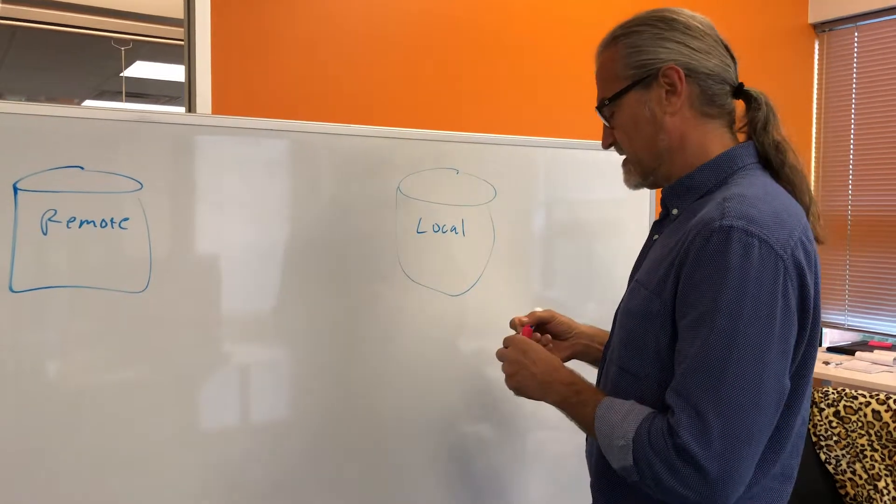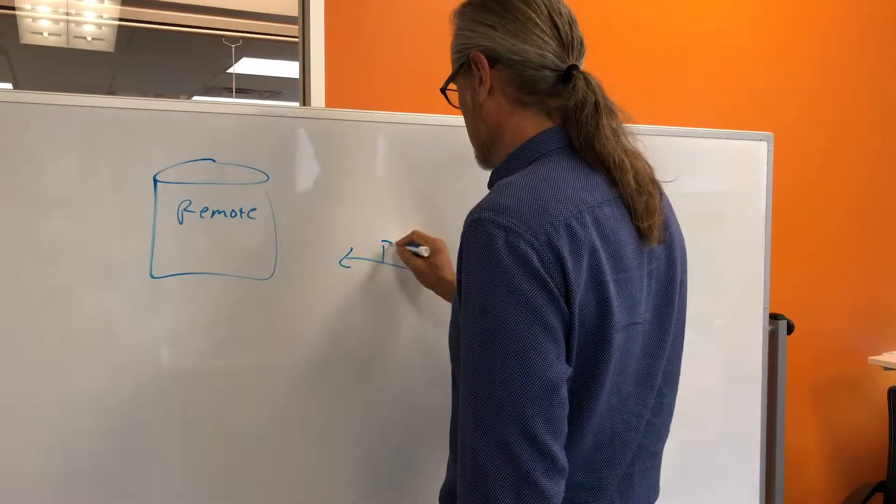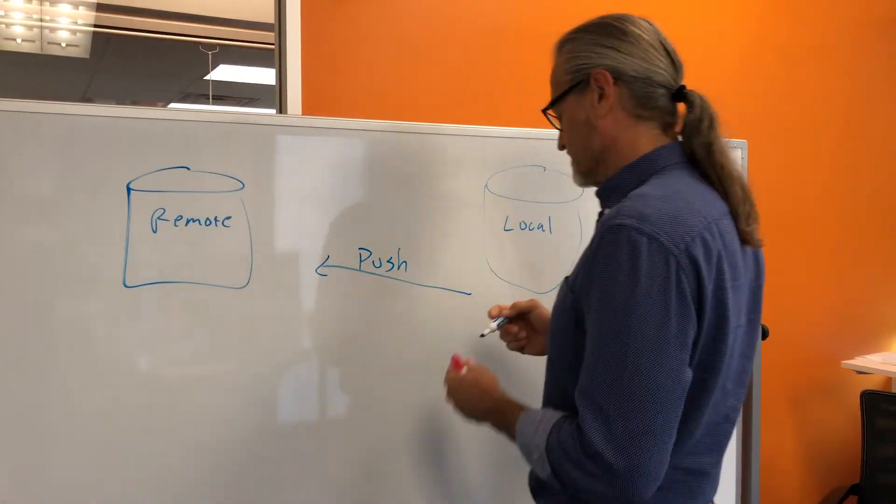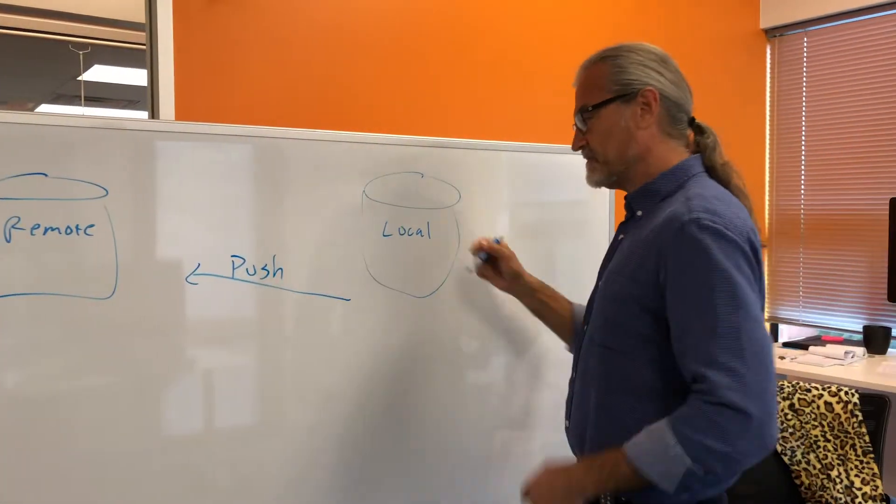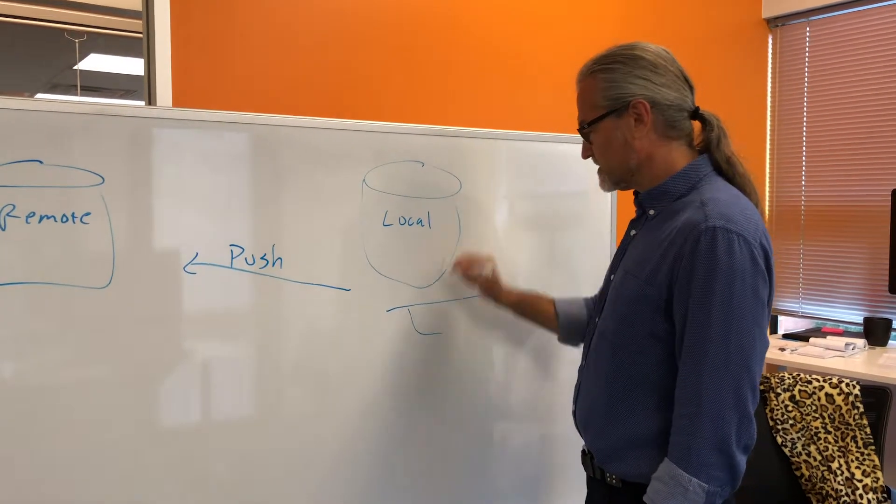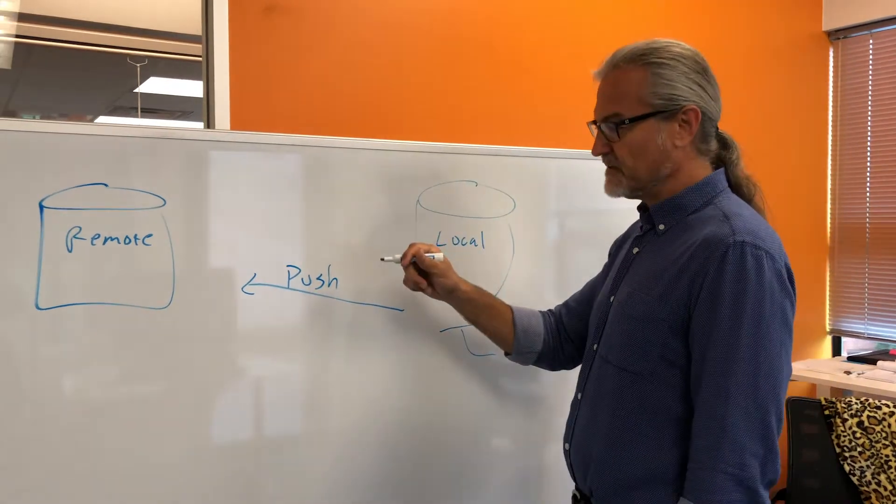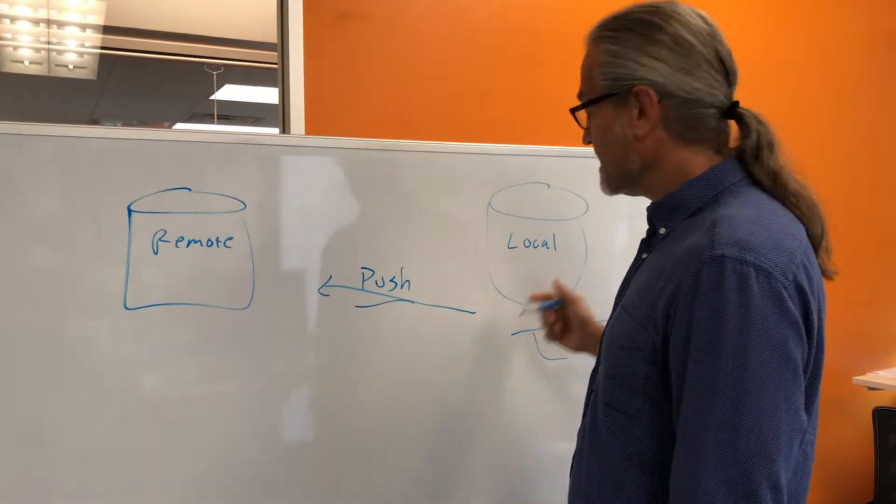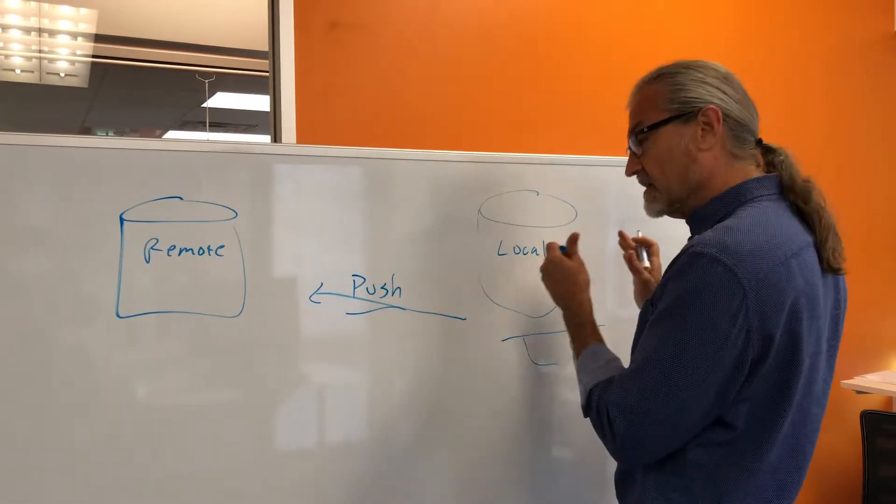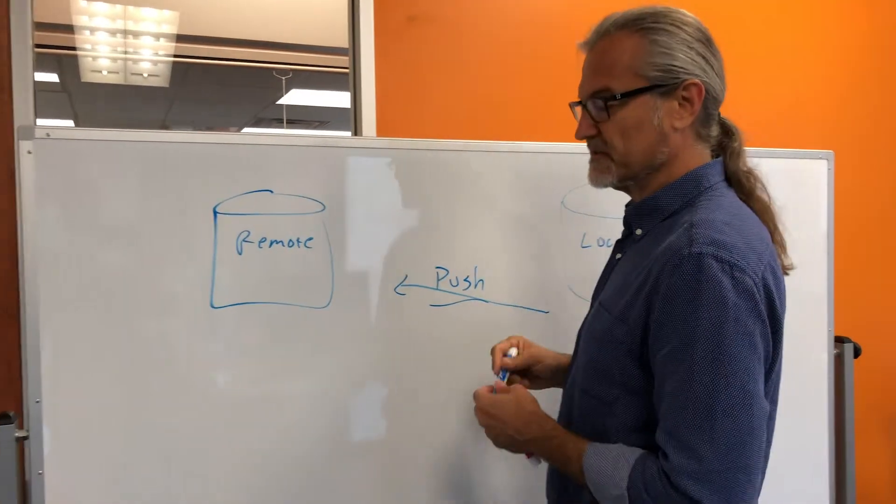The only way that things make it to the server is through a push. When you're committing into branches, you are actually committing locally to your local repository. If you want this to be seen by anybody else, you have to issue a git push. That will push all of your local changes up to the server and allow people to see those changes.